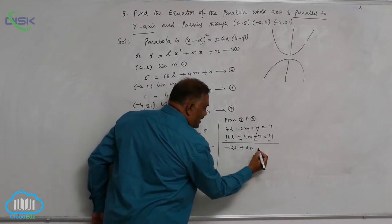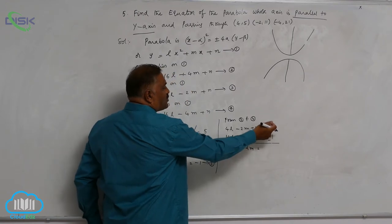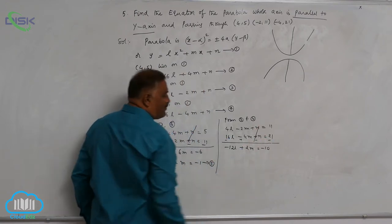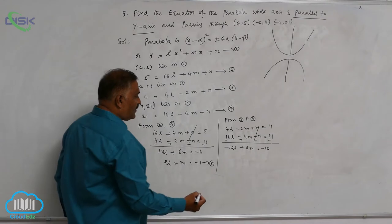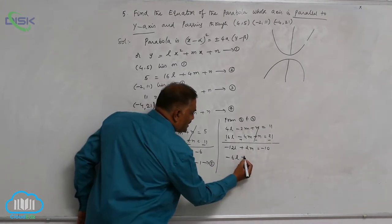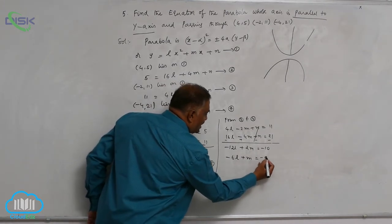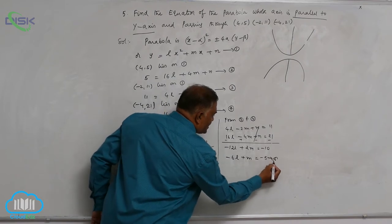This is minus 12. Cancel with 2. This is minus 6l plus m is equal to minus 5. Make it equation number 6.